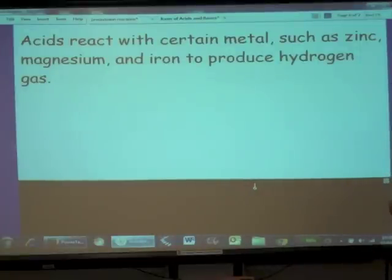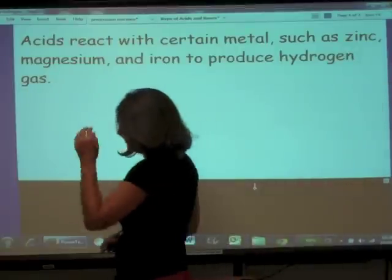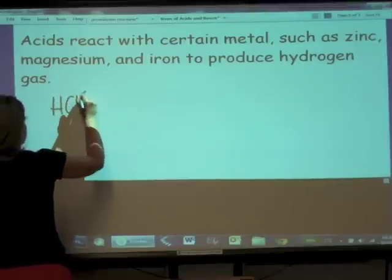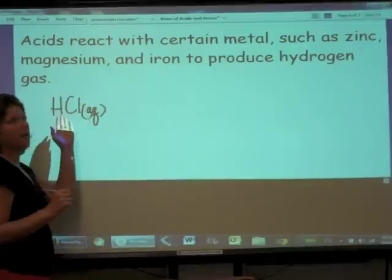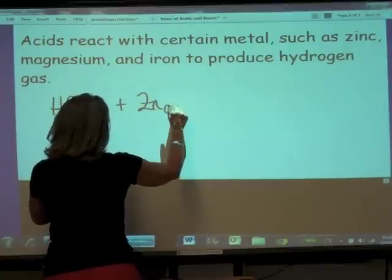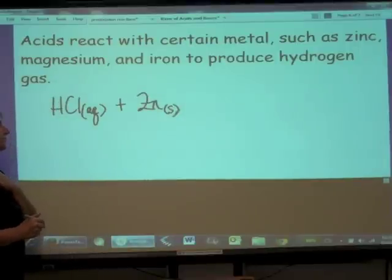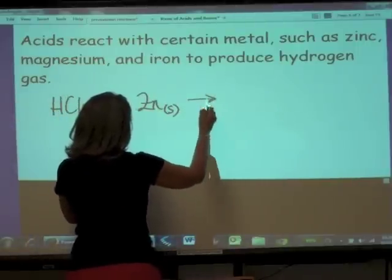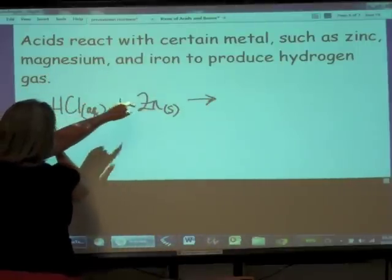Acids react with certain metals such as zinc, magnesium, and iron to produce hydrogen gas. So up to this point we've been doing double replacements, kind of where the cation switches though. The acid with the carbonate kind of shakes things up a little bit. So this is going to be an example of a single replacement reaction. For example, we've got hydrochloric acid, and this could be any acid here, reacting with, let's say, zinc. Solid zinc, zinc metal.